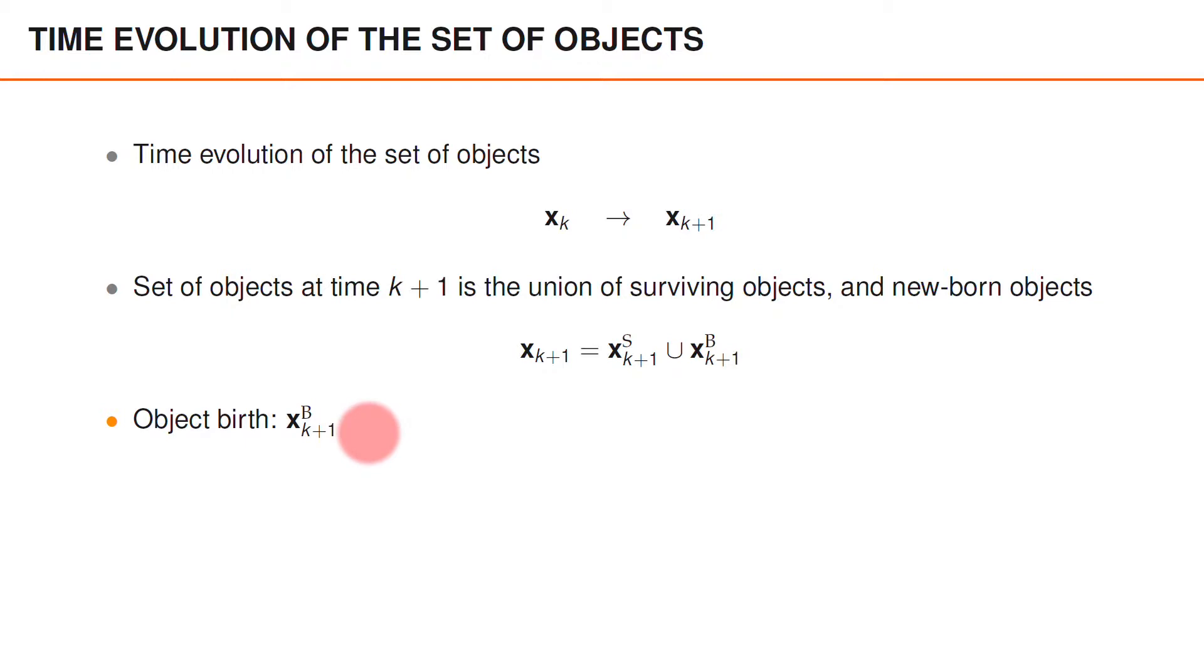Object birth is the set of newborn objects xb. Object death is the objects at time k that do not survive to time k plus 1, and are therefore not in the set xs.